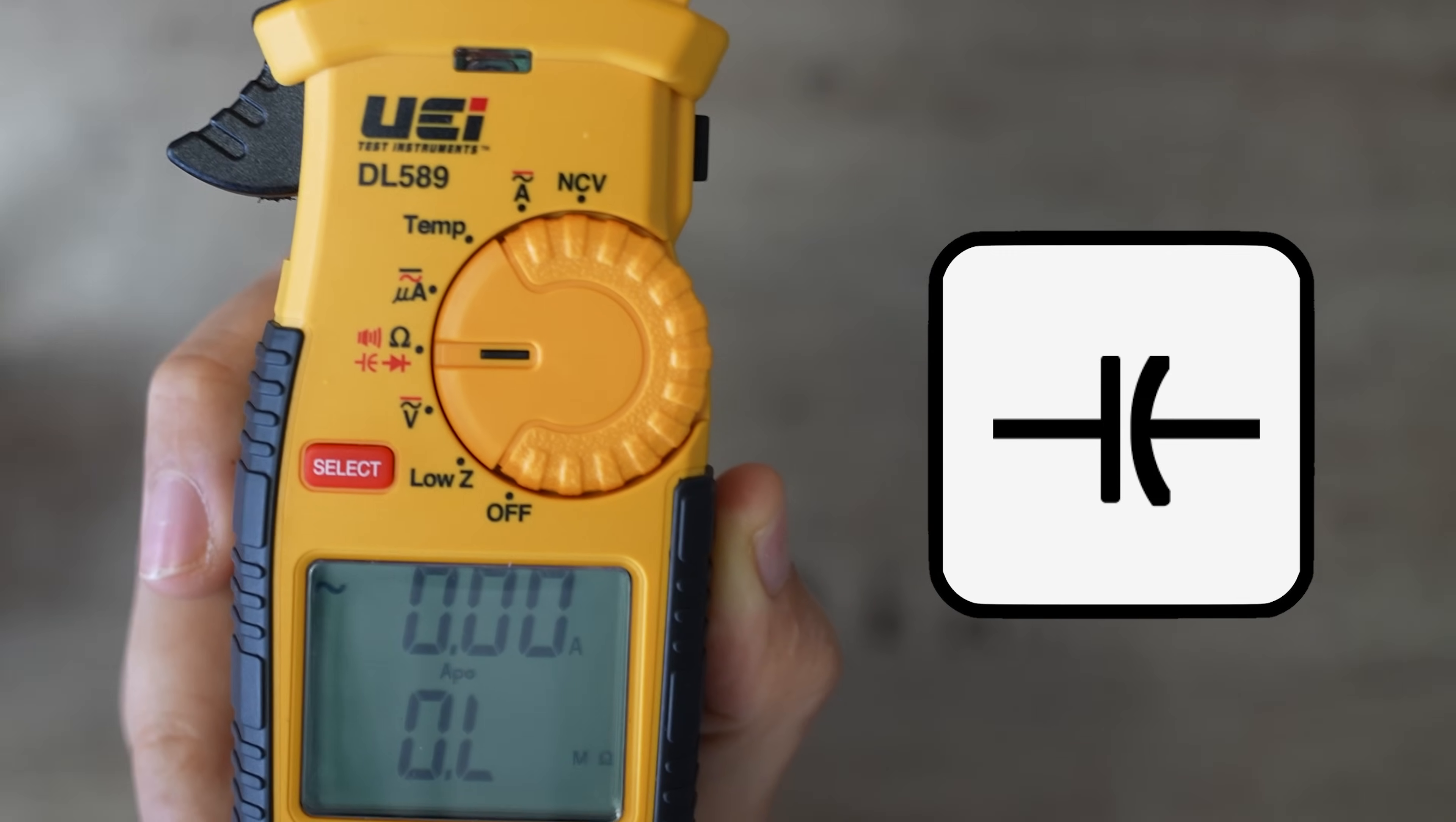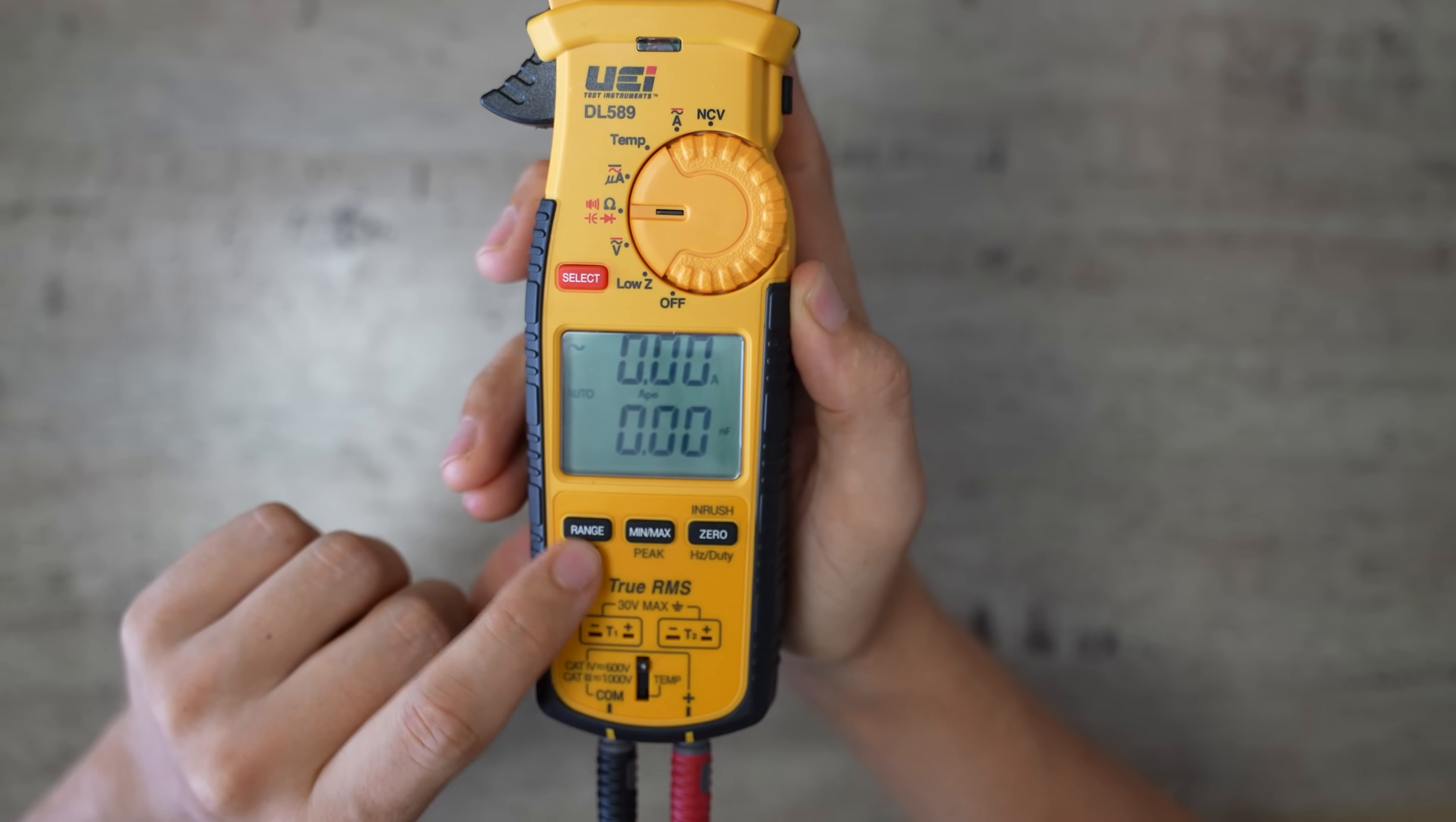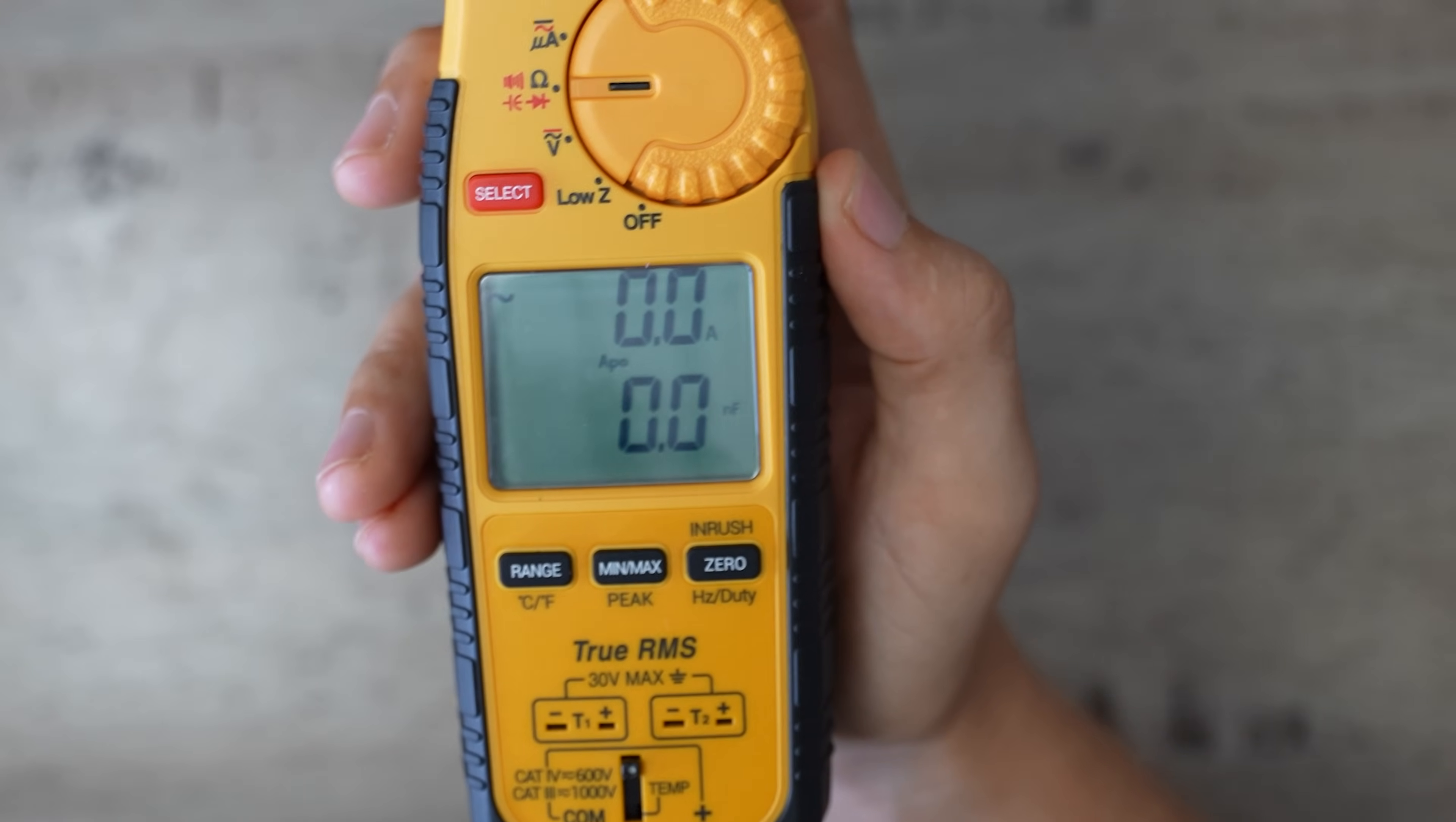Next up, we have the capacitance setting, which is used to test all kinds of capacitors. Capacitors are measured in farads, abbreviated by this letter F right over here. And the letter N right in front of it stands for nano. The letter N is rarely used because it's such a tiny reading. Usually what you're going to see is a UF, which stands for microfarads. Just to show you what I mean, 0.1 microfarads equals 100 nanofarads. Just like the resistance, this meter automatically selects the proper range, but I could select it manually if I so wanted to. I prefer to just leave it on auto and let the meter select the proper range.